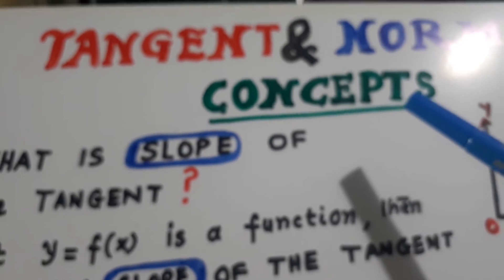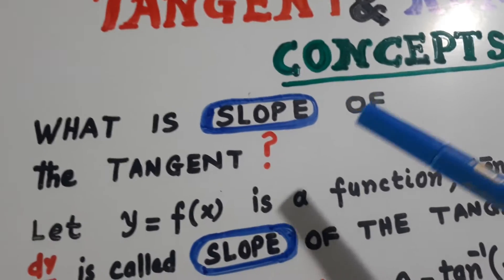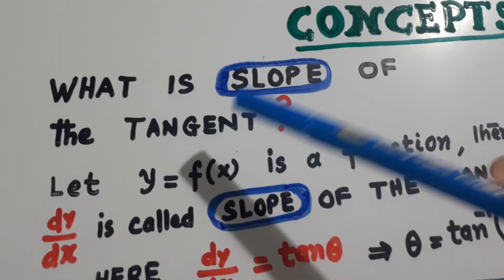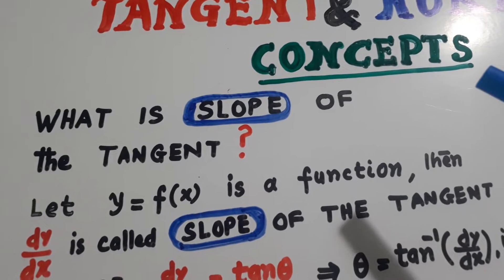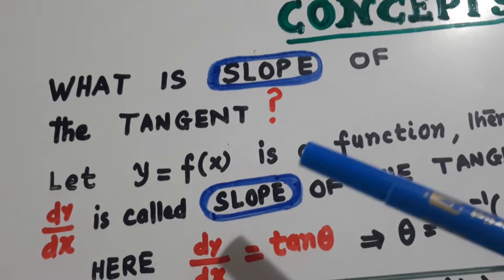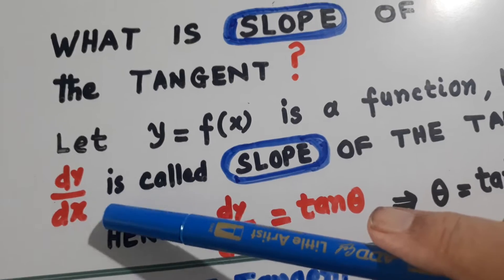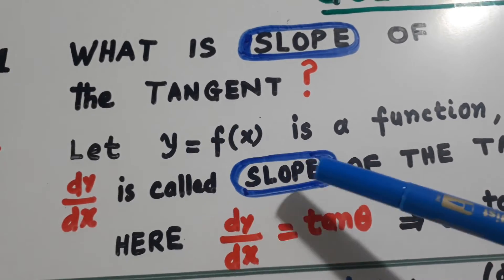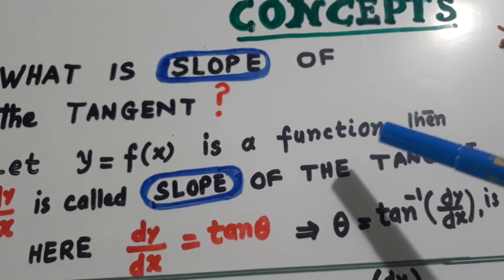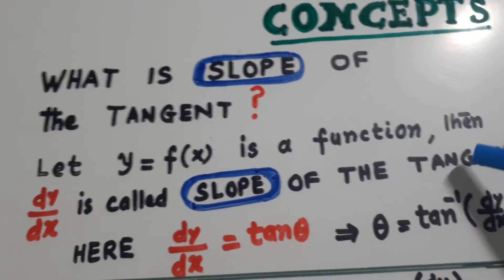Let us try to understand what does Tangent mean? What is the slope of Tangent? So we are starting with the slope of Tangent. It is nothing but dy by dx, derivative of y with respect to x. Let y equals f(x) is a function, then dy by dx is called slope of the tangent.